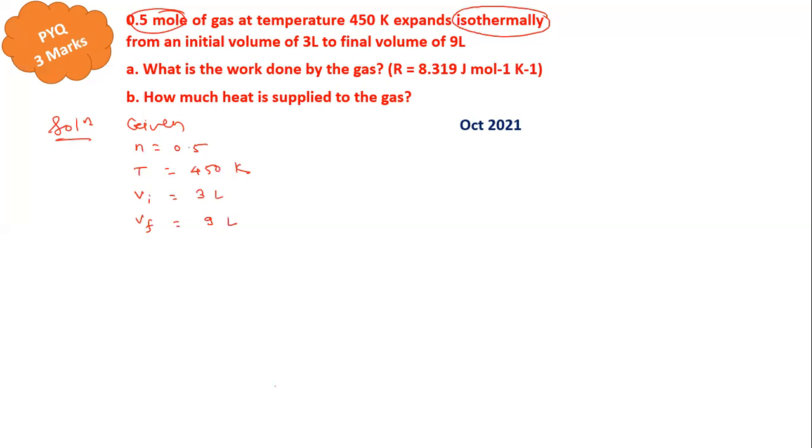The first thing we have to find out is the work done. In isothermal expansion, work done is given by the formula: W = nRT ln(Vf/Vi), where ln is the natural logarithm to base e.